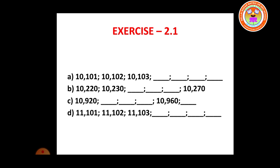For the third question: 10,920 with three blanks and then 10,960. The difference between 10,920 and 10,960 is 40, with three blanks in between, so we add 10 each time. 10,920 plus 10 gives 10,930, then 10,940, then 10,950, then 10,960, then 10,970.